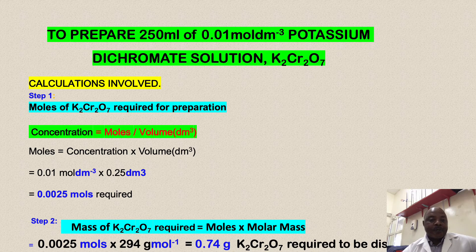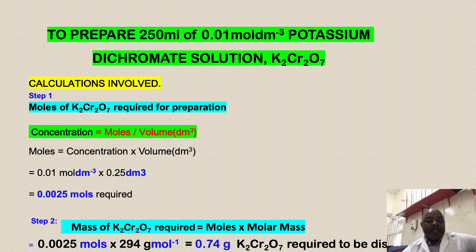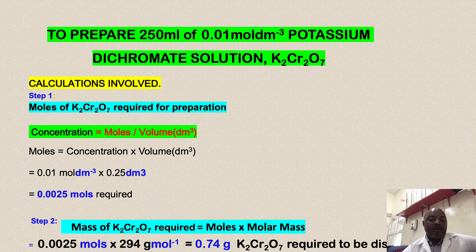In this situation, the relation is concentration equals moles divided by volume in dm³. The number of moles will be equal to concentration times the volume.